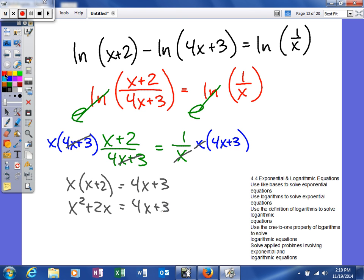Now I'm going to set it equal to 0. So now I'll subtract both those. x squared. Subtract 4x. So I'll get negative 2x. And then minus 3.